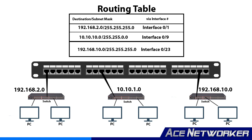A routing table keeps track of important pieces of information such as the network address assigned to all of the different interfaces on that router, the subnet masks it has to deal with, the route sources, the destination network, and the outgoing interface that each network is connected to. As you learn more about IP addressing, IP version 4, IP version 6, and routers, you'll understand more of this terminology and what it does.